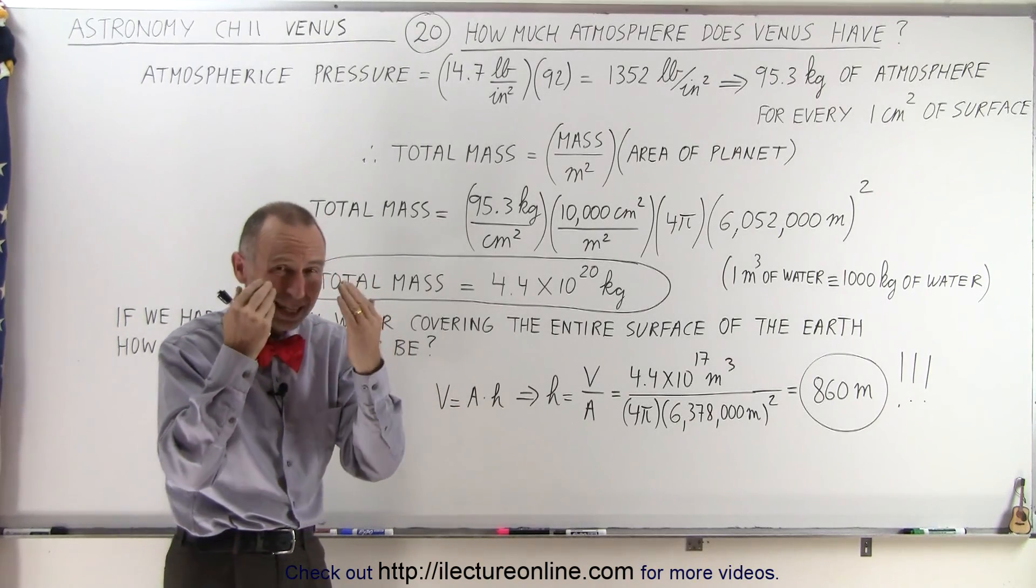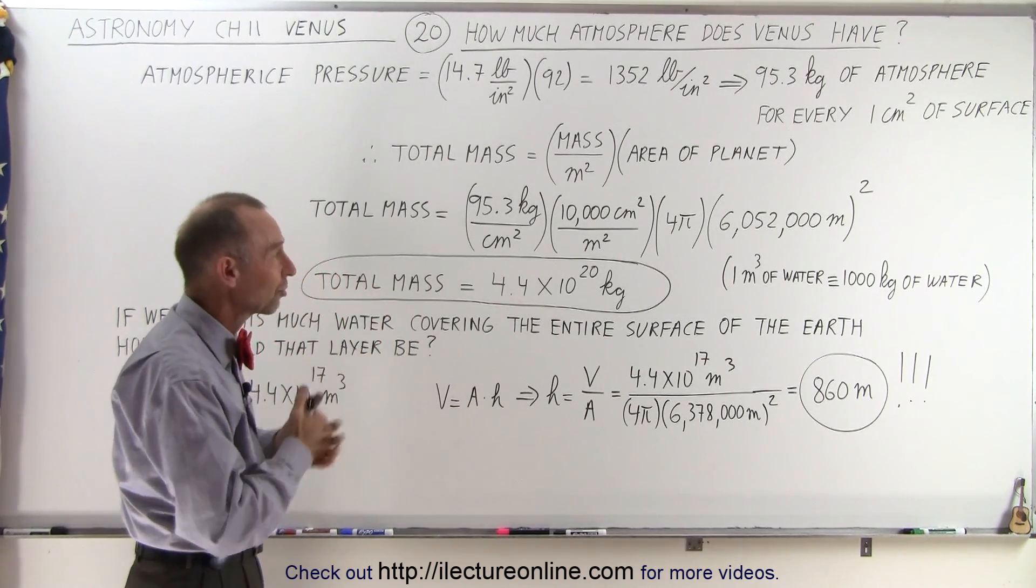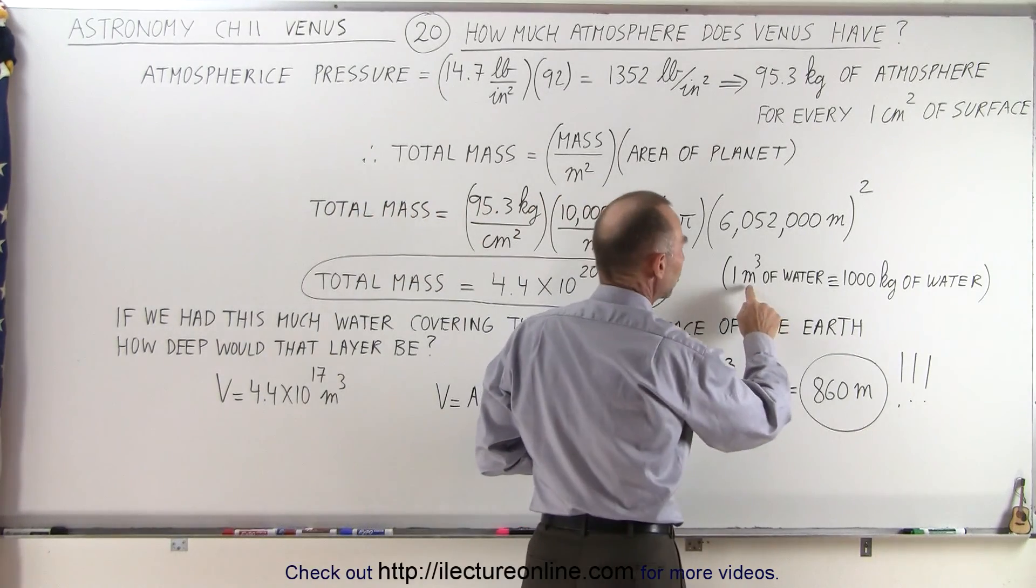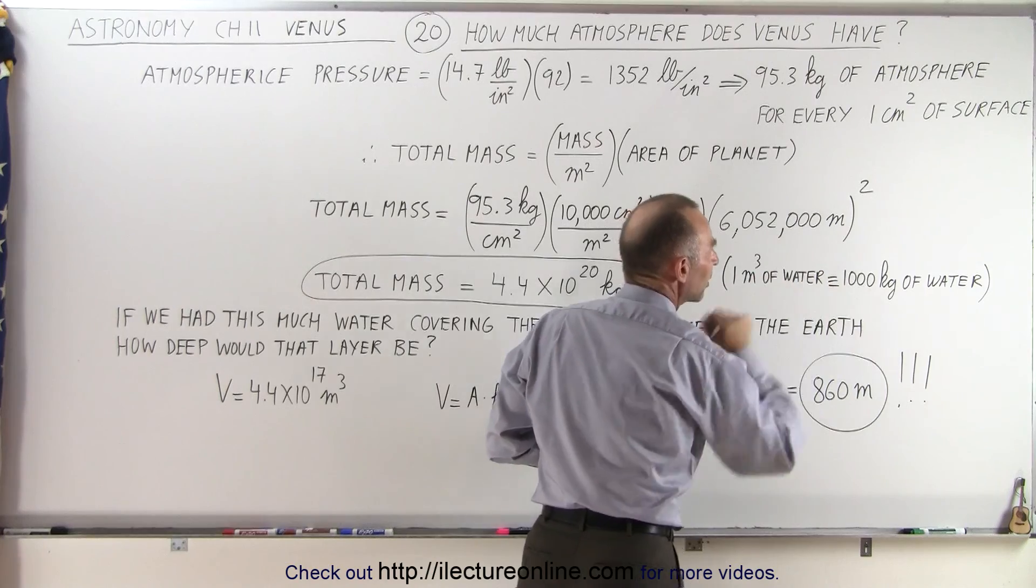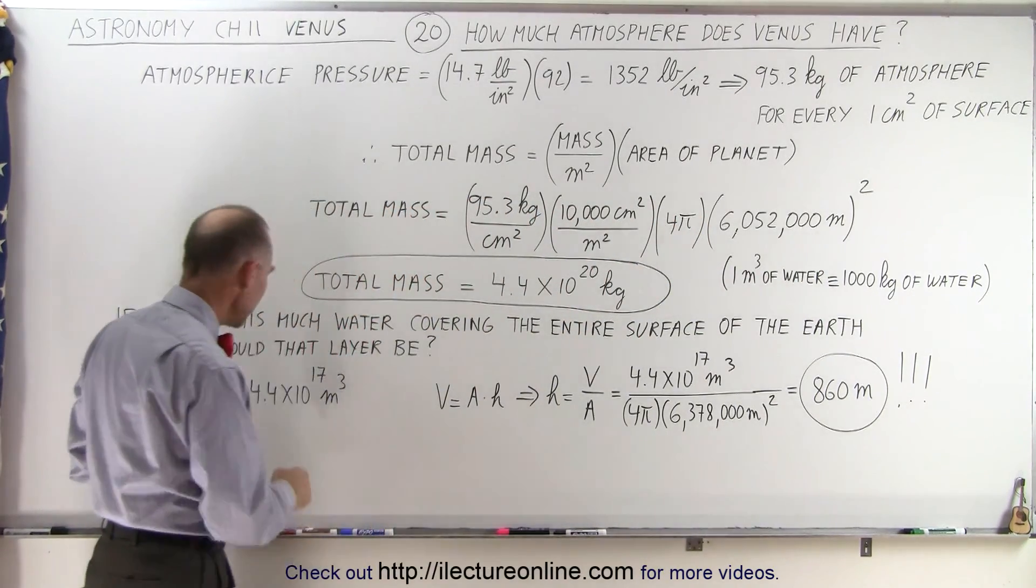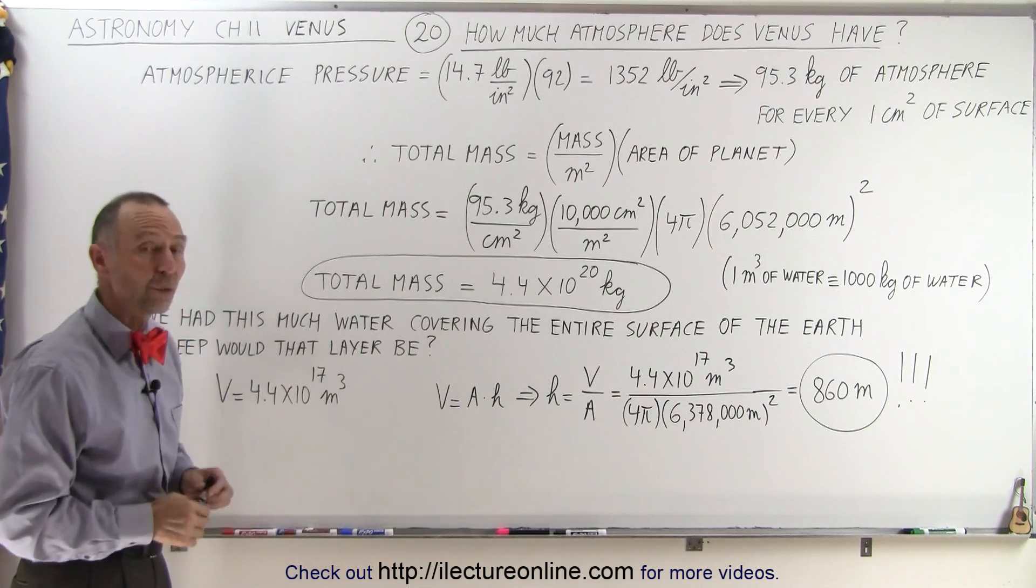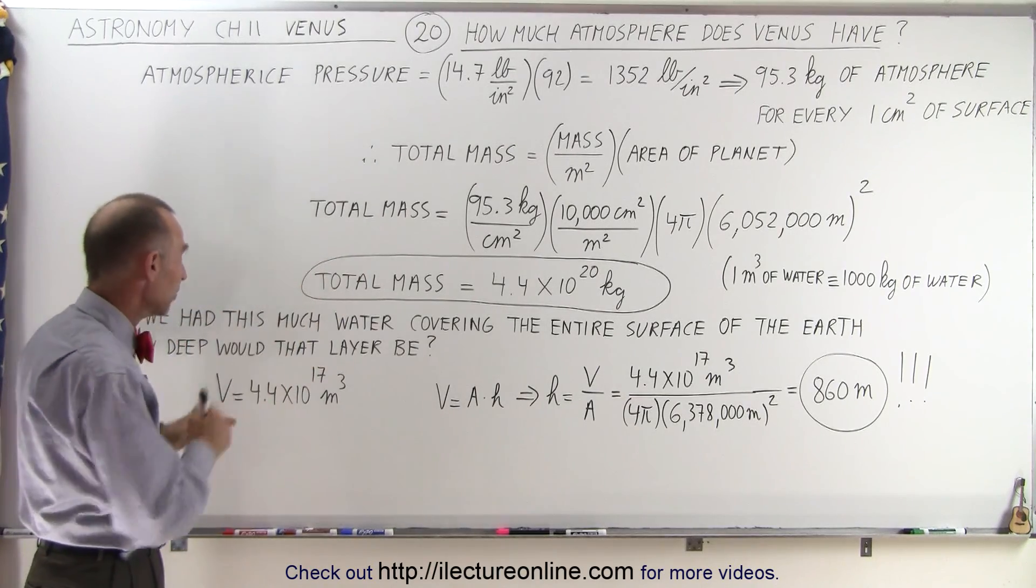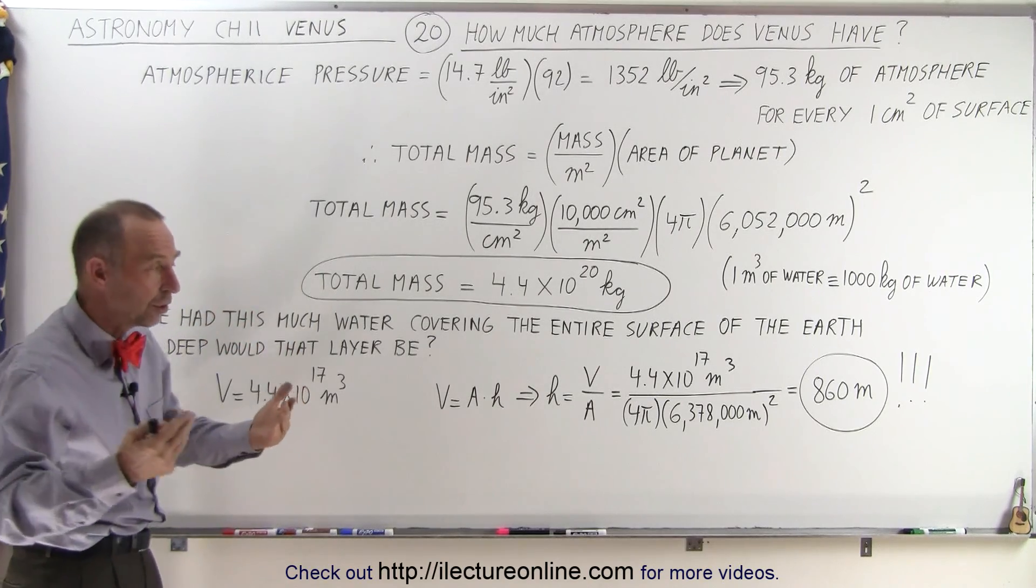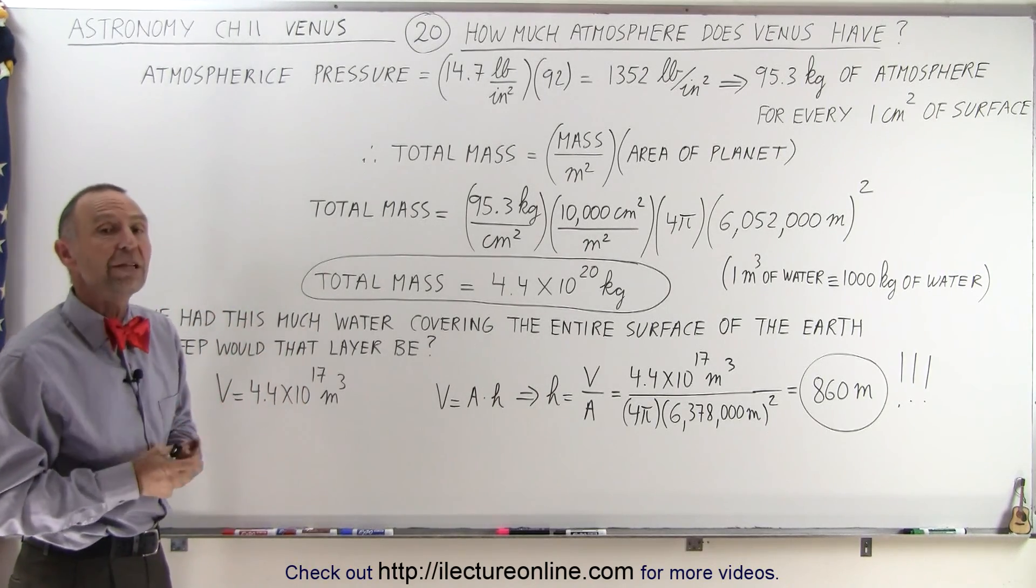That's a big number, but how do we get kind of a comprehension of what that actually is? Well, when we realize that the mass of one cubic meter of water is equal to 1,000 kilograms, that means that this many kilograms would then be this many cubic meters of water. We simply divide the number by 1,000, and this is the number of cubic meters of water equivalent the atmosphere would be on Venus.